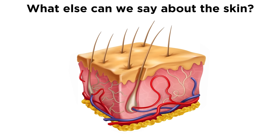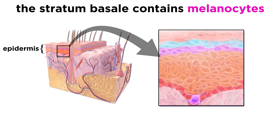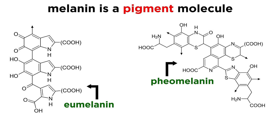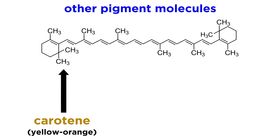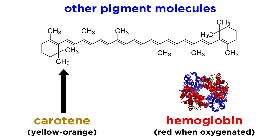We mentioned that the stratum basale also contains melanocytes, which produce melanin. This is a pigment molecule, and this is one of the components of the skin that determines its color, and protects the skin from ultraviolet radiation. The other pigments responsible for skin color are carotene, which is yellow-orange, and hemoglobin, which is red when oxygenated. We will discuss this molecule in more depth later in the series.